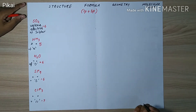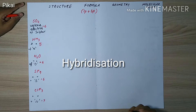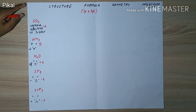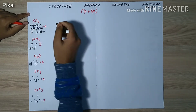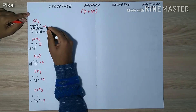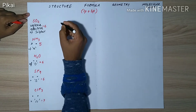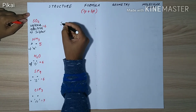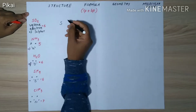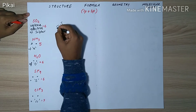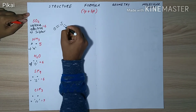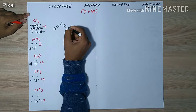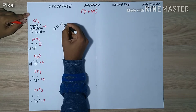Hello, today we are going to learn about hybridization in a very quick and easy process. First of all, we have sulfur dioxide with sulfur as the central atom, having six valence electrons. Out of six valence electrons, it shares two with one oxygen atom and another two with another oxygen atom.